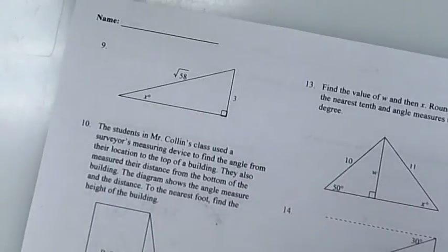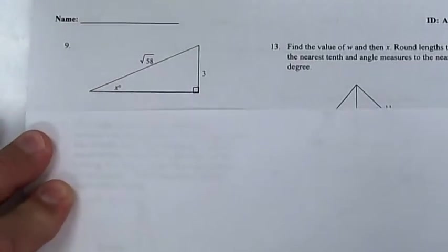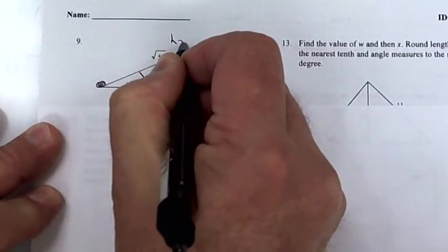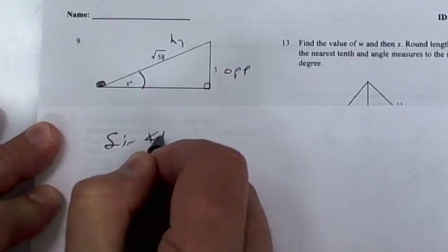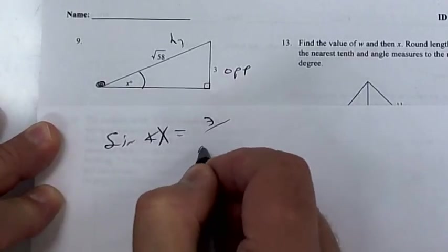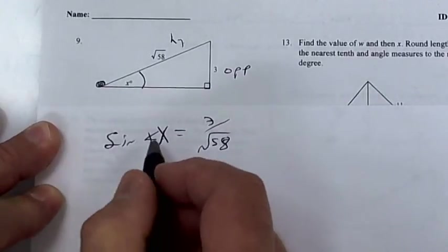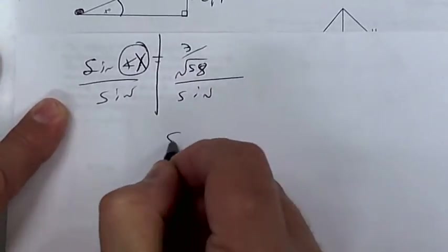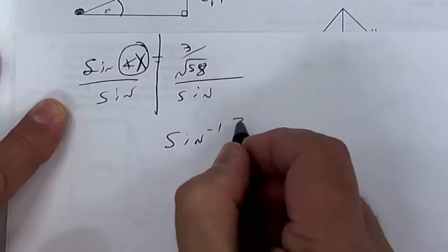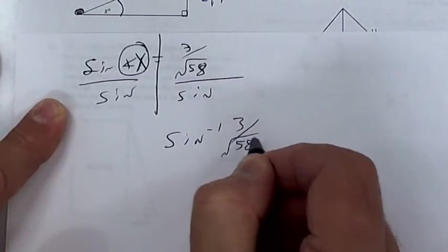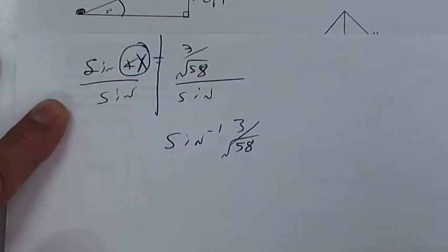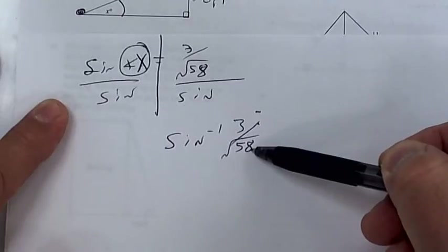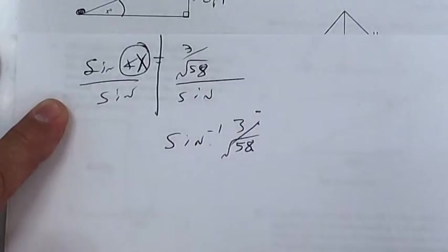Number 9 is an inverse function because you're looking for the angle. Put a dot right here — it's opposite and hypotenuse, so that's the sine. Put sine of angle x is equal to opposite over hypotenuse. Draw a line, circle the x, and divide by the word sine. When you divide by the word sine, it becomes the arc sine. You have to hit the shift key — it's 3 divided by the square root of 58. Take 3 divided by 58, shift square root, press equals, then hit shift sine, and you should get the answer.